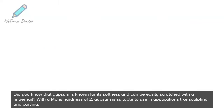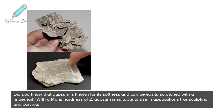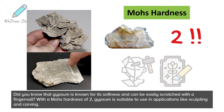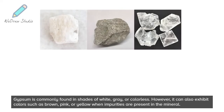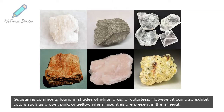Did you know that gypsum is known for its softness and can be easily scratched with a fingernail? With a Mohs hardness of two, gypsum is suitable for applications like sculpting and carving. Gypsum is commonly found in shades of white, gray, or colorless; however, it can also exhibit colors such as brown, pink, or yellow when impurities are present in the mineral.